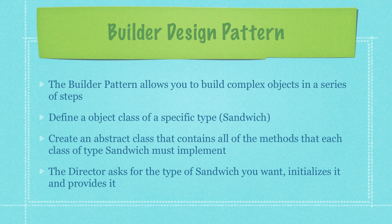The builder design pattern allows you to build complex objects in a series of steps. You define an object class — in this tutorial we'll talk about the sandwich class. Then you create an abstract class containing all the methods that each class of type sandwich must implement. Then you have a director class that is asked for a specific type of sandwich, initializes that sandwich object, and then provides it.